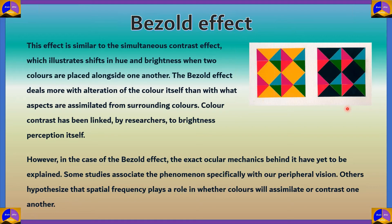In the case of the Bezold effect, the exact ocular mechanics behind it have yet to be fully explained. We know that color mixing happens when colors appear in adjacent spaces, but the scientific reasons for what happens inside the eye are less studied. Some studies associate the phenomenon with peripheral vision, while others hypothesize that spatial frequency plays a role in whether colors assimilate or contrast one another.